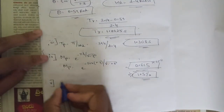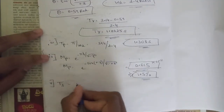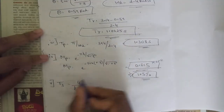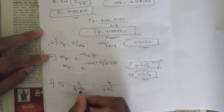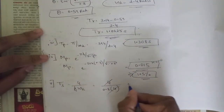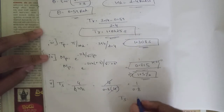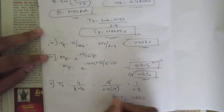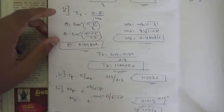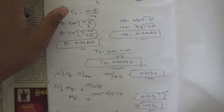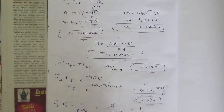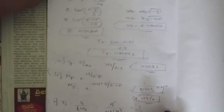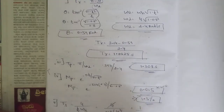Settling time ts (for ±2% tolerance band) = 4 / (ζ·ωn) = 4 / (0.8 × 4) = 1.25 seconds. We have now found all five time domain specifications: td = 0.39s, tr = 1.0625s, tp = 1.308s, mp = 1.5%, ts = 1.25s. Please like, share, subscribe and refer to the playlist for model question paper solutions.